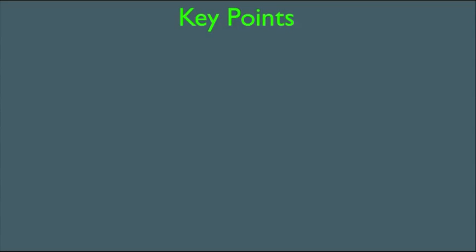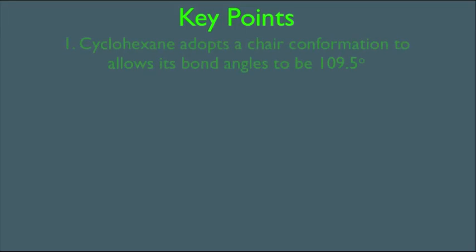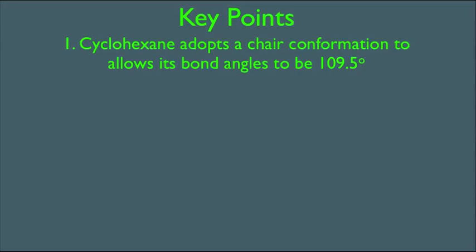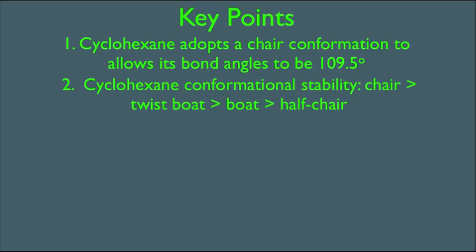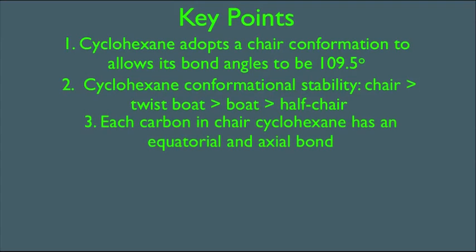In this online lecture, we're going to talk about how to do conformational analysis of cyclohexane. The first key point is that cyclohexane adopts a chair conformation to allow its bond angles to be 109.5 degrees. We're also going to learn that conformational stability ranks as: chair structures are more stable than twist boat, which are more stable than boat, which are more stable than half chair. Third, each carbon in chair cyclohexane has an equatorial and what's called an axial bond.